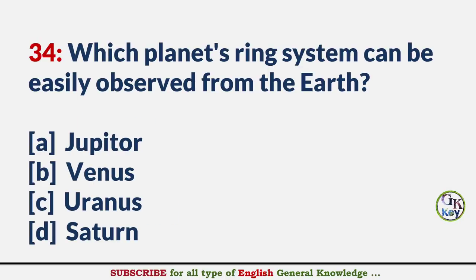Which planet's ring system can be easily observed from Earth? Answer D: Saturn.